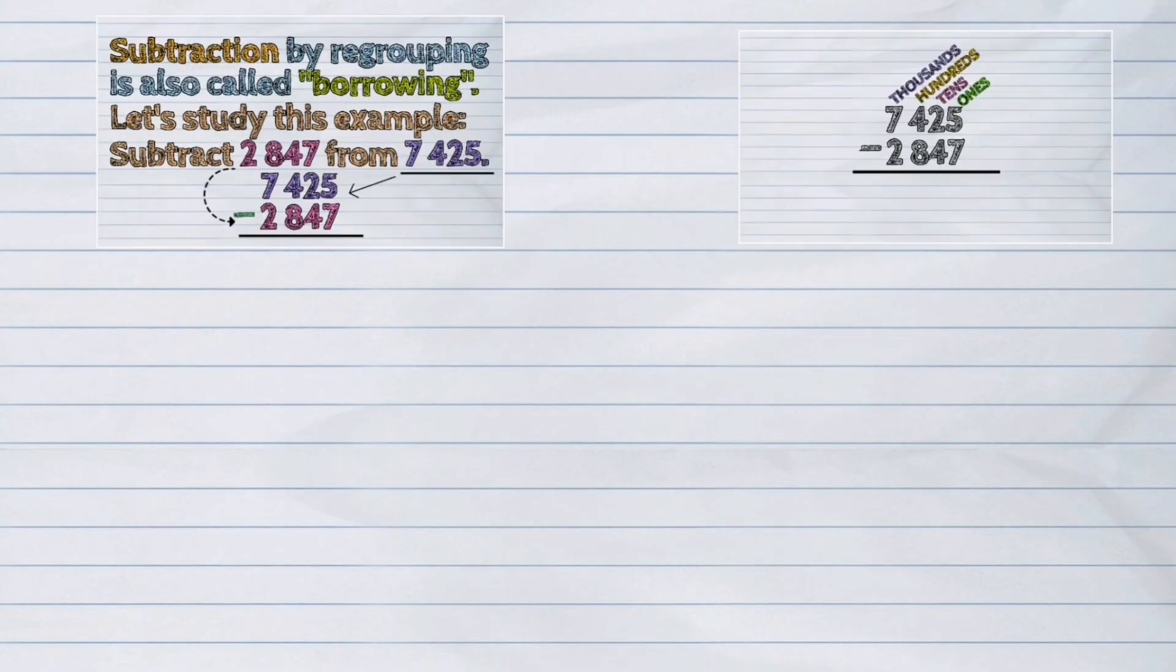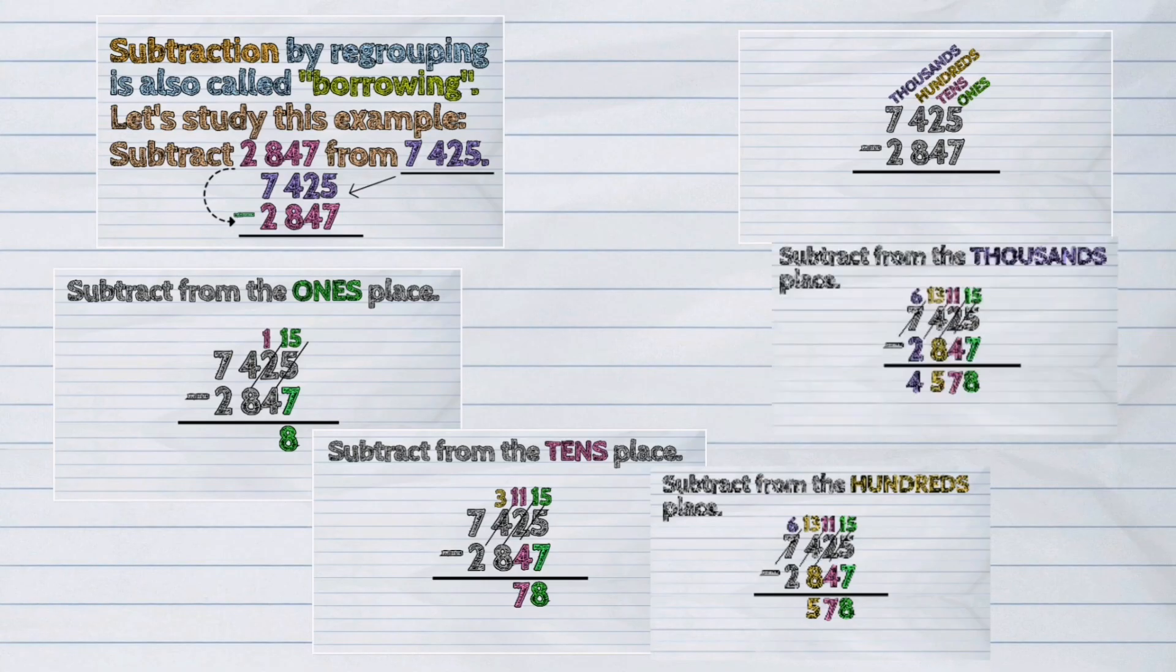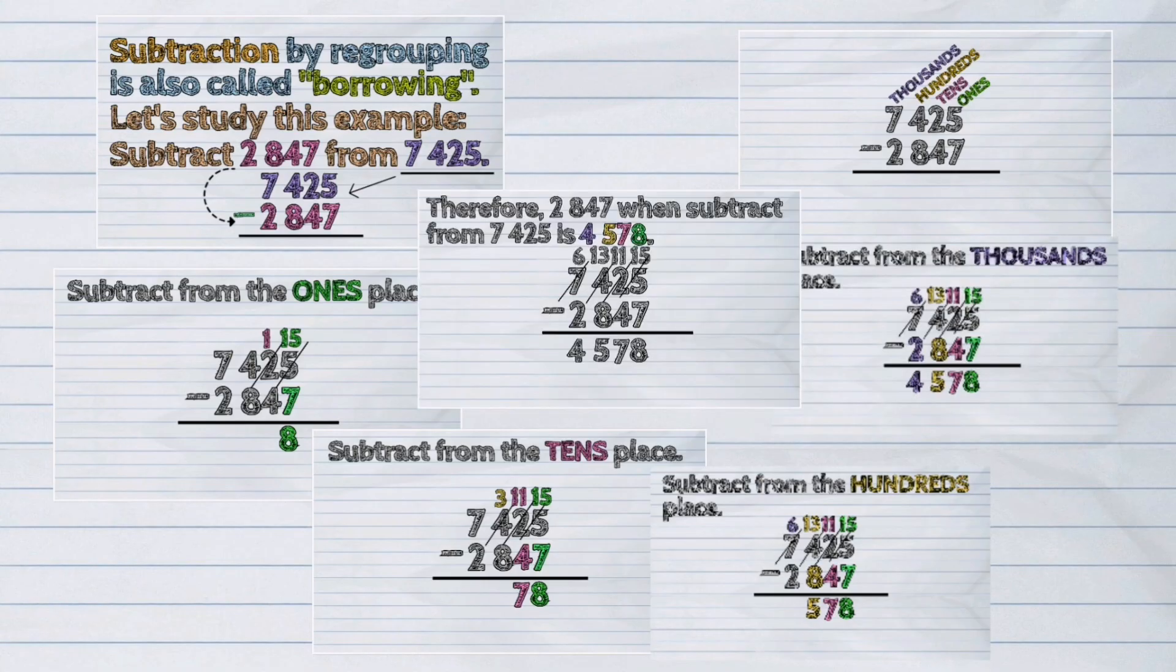And that was how subtraction with regrouping is done. Remember that we only borrow when the minuend is smaller than the subtrahend.